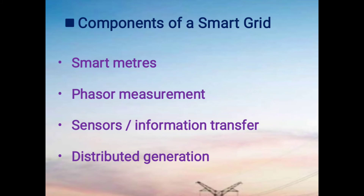The components used in smart grid include smart meters, phasor measurement, sensors, information transfer, and distributed generation. Smart meters replace traditional meters. They recognize and record detailed electrical consumption and transfer information to a central monitoring station. They also monitor time of peak consumption, provide power outage notifications, and enable power quality monitoring.